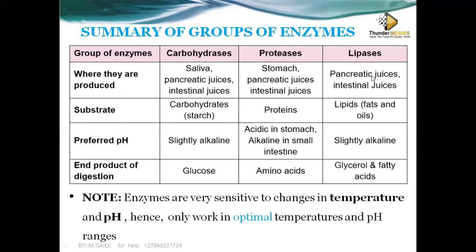Lipases are found in pancreatic juice (duodenum) and intestinal juices (the ileum). The substrate is lipids — fats and oils, whether from plants or animals. Because the duodenum and ileum are alkaline, lipases work in an alkaline medium. The end products of lipid digestion are glycerol and fatty acids.